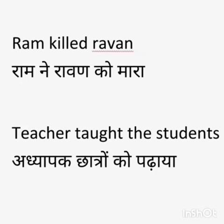Example: Ram killed Ravan. The verb 'killed' is affecting the object Ravan. So we write 'Ravan Ko'. In this example, the verb is giving the answer of 'whom' — Ram killed whom? Ravan. So we write Ravan Ko.